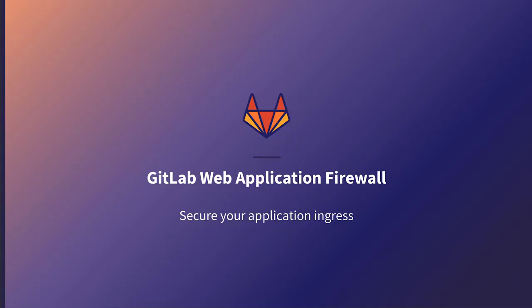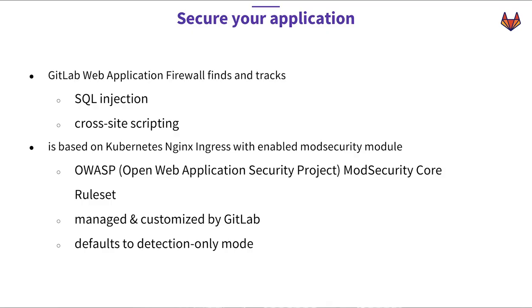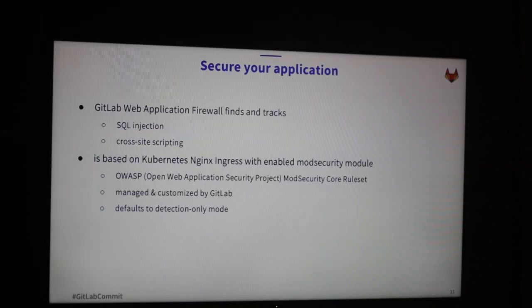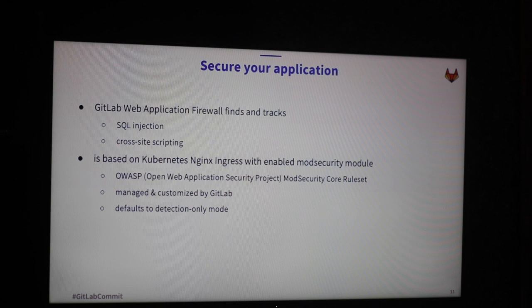Next is a nice solution for securing your applications running in Kubernetes - the GitLab Web Application Firewall. The GitLab Web Application Firewall is integrated into the Kubernetes Nginx Ingress, which is deployed when you install the Ingress from the GitLab UI shown in the first demo. You install Helm, click to install the Ingress, and you get an Ingress that also includes a Web Application Firewall.